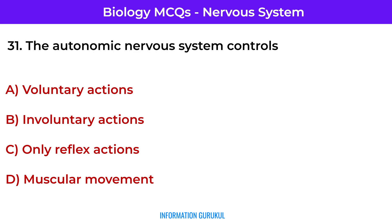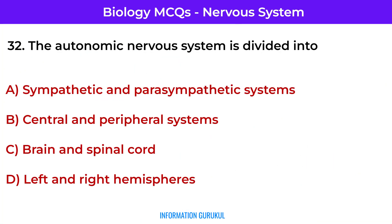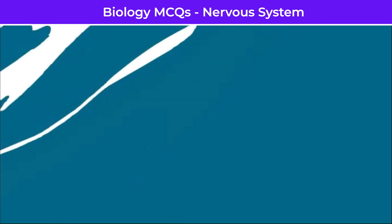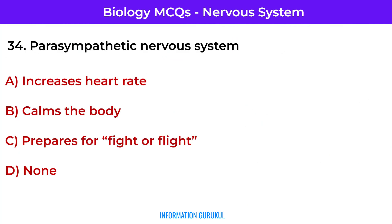The autonomic nervous system controls involuntary actions. The autonomic nervous system is divided into sympathetic and parasympathetic systems. The sympathetic nervous system speeds up body functions during an emergency. The parasympathetic nervous system calms the body.